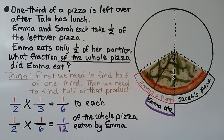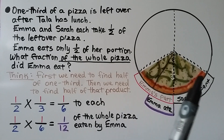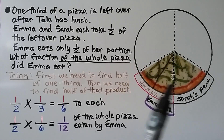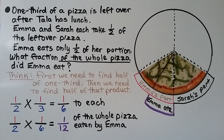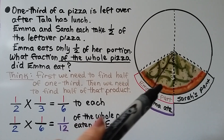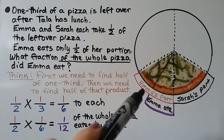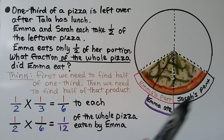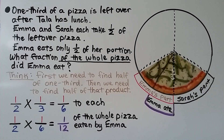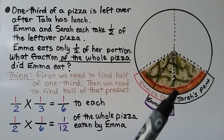Here we have one-third of a pizza left over. After Tala has lunch, Emma and Sarah each take half of the leftover pizza — we split that one-third in half. Here is Emma's part and here is Sarah's part. But Emma eats only half of her portion. So what fraction of the whole pizza did Emma eat? There was one-third left.